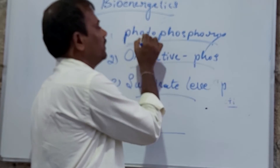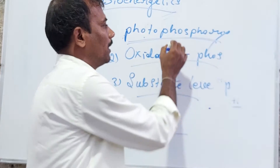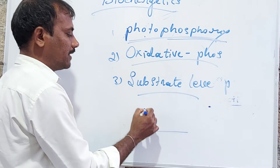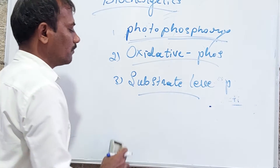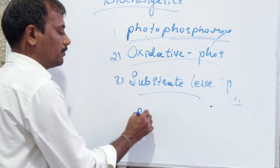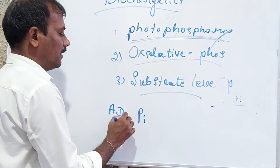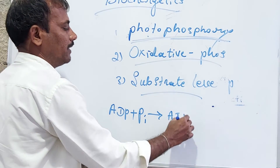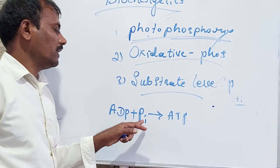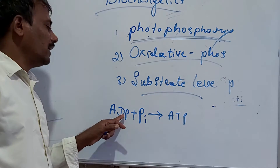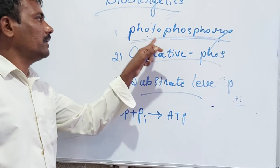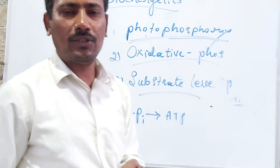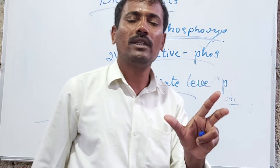Photo means light; phosphorylation means addition of inorganic phosphate to ADP to form an ATP molecule. The process of addition of inorganic phosphate to ADP to form ATP can be termed photophosphorylation. Photophosphorylation occurs during photosynthesis within the plant body.